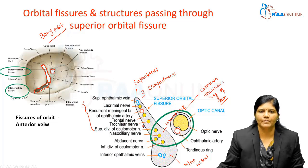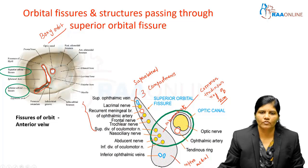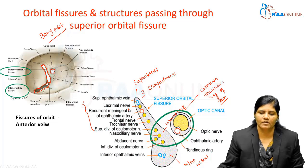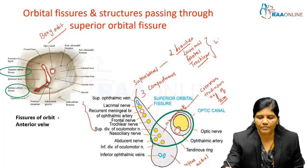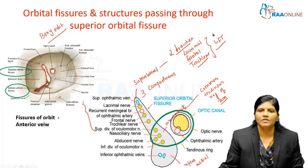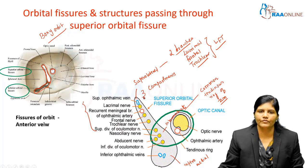In the suprolateral compartment, from lateral to medial, there is the superior ophthalmic vein, then the lacrimal nerve, then the recurrent meningeal branch of the ophthalmic artery, the frontal nerve, and the trochlear nerve. So the suprolateral compartment transmits two branches of the ophthalmic nerve — lacrimal and frontal — as well as the fourth cranial nerve, the trochlear nerve. The mnemonic for this compartment is LFT (Lacrimal, Frontal, Trochlear), like a liver function test.